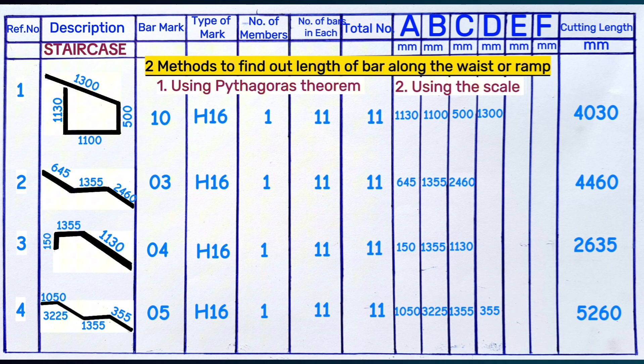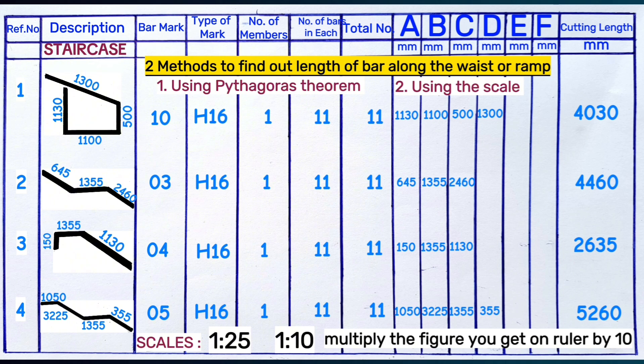The second method is using the scale. Measure the length using a ruler on paper, then multiply what you get by the figure on the scale, let's say 1 in 25, meaning you multiply what you get by 25, or 1 to 10, meaning you multiply the figure you get on the ruler by 10. It's not just on every paper. The scale always goes hand-in-hand with a specific paper size, say A1, A4, among others.